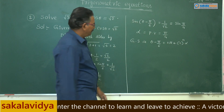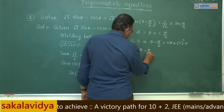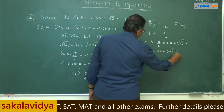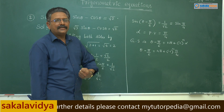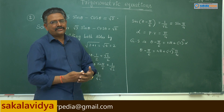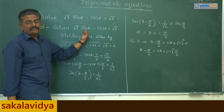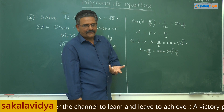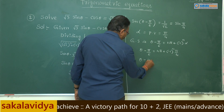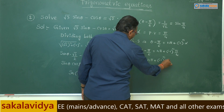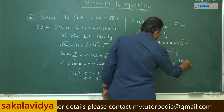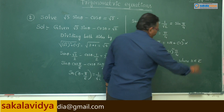Now replacing α with π/4: θ - π/6 = nπ ± (-1)ⁿ · π/4. Here we are required to find out the value of θ, which is the general solution of the given trigonometric equation. Transposing -π/6 to the other side, therefore θ = nπ ± (-1)ⁿ · π/4 + π/6, where n belongs to integers Z. This is the solution.